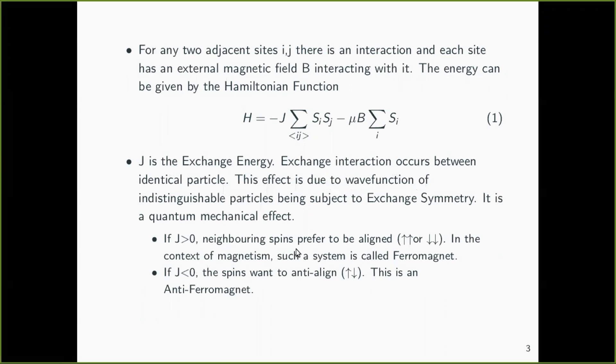J is greater than zero if they are aligned parallel both up or down and this is the condition of a ferromagnet. If J is less than zero, they anti-align one up spin and the other is down spin and this is known as an anti-ferromagnet.